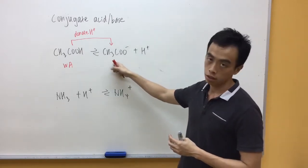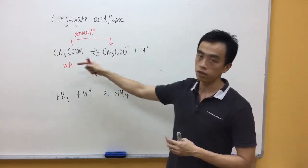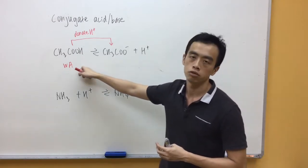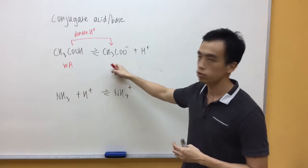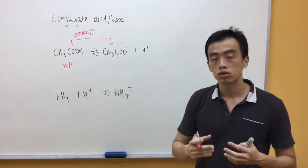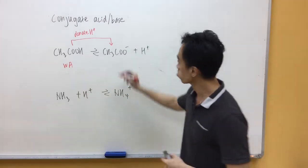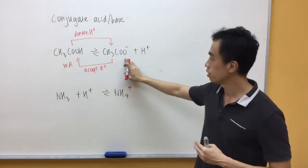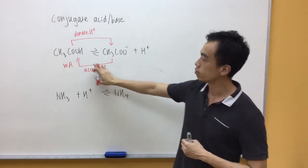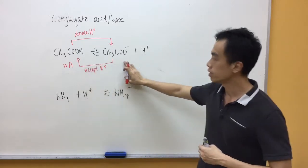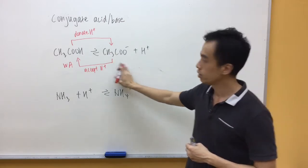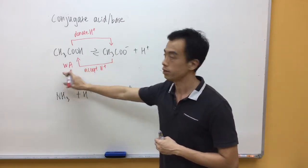Now, what you notice in this case is my CH3COO- in the reverse direction, it accepts H+ to form back CH3COOH. So, CH3COO- actually is functioning as a base. Like what we mentioned earlier, CH3COO- accepts H+ to form CH3COOH. So, this guy actually functions as a base. So, we call this a conjugate base of this particular weak acid.